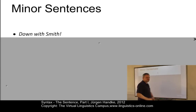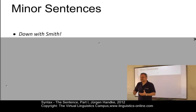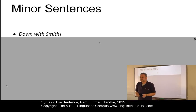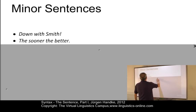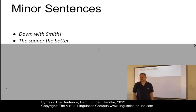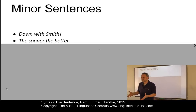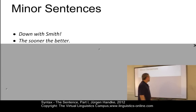"Down with Smith" is an example where you wouldn't have a subject-predicate structure. Where is the predicate? There is no verb even in this sentence, and the subject is simply not there. "The sooner the better" is another example. We cannot move elements around — "the better the sooner" or something like that simply doesn't work.